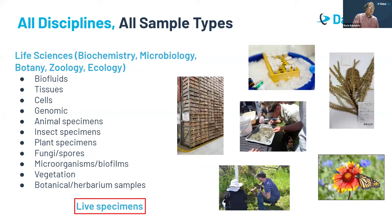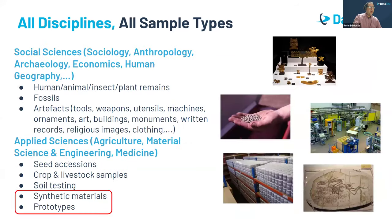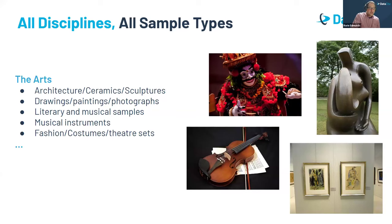From the life sciences — biochemistry, microbiology, botany, zoology, ecology — these are sample types you might be thinking about there, and this does include live specimens. In social sciences — sociology, anthropology, archaeology, economics, human geography — and applied sciences — agriculture, material sciences and engineering, medicine. It's not just about samples you go out and collect; it is samples that are created and synthesized as well. Synthetic materials or prototypes also completely come under the umbrella of an IGSN ID. Even the arts. We really are talking across the board.